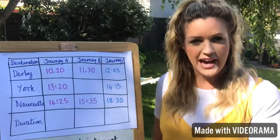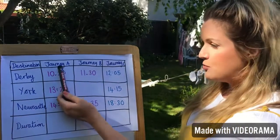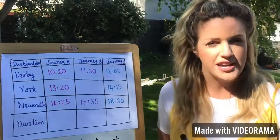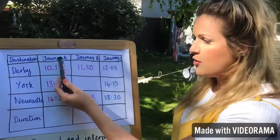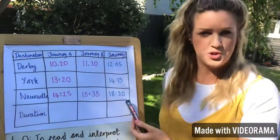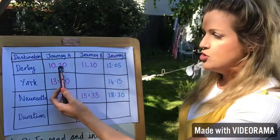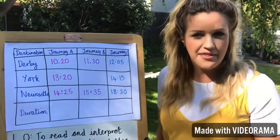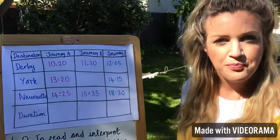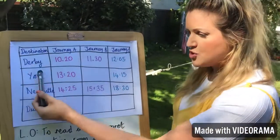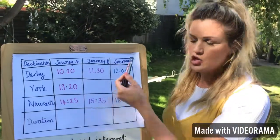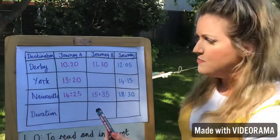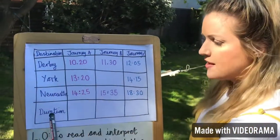Up here we've got Journey A, Journey B, and Journey C — so there are three different options depending on what time suits you and how quickly you want to get there. It's the same train journey but there are three options. The first thing I'm going to do is work out the duration of Journey A.